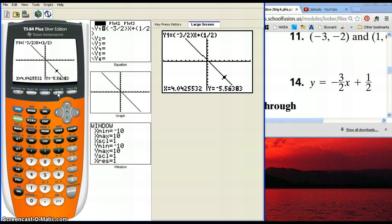The trace button allows you to move back and forth. And if you push the trace button and type in a number, it allows you to evaluate at that specific number.